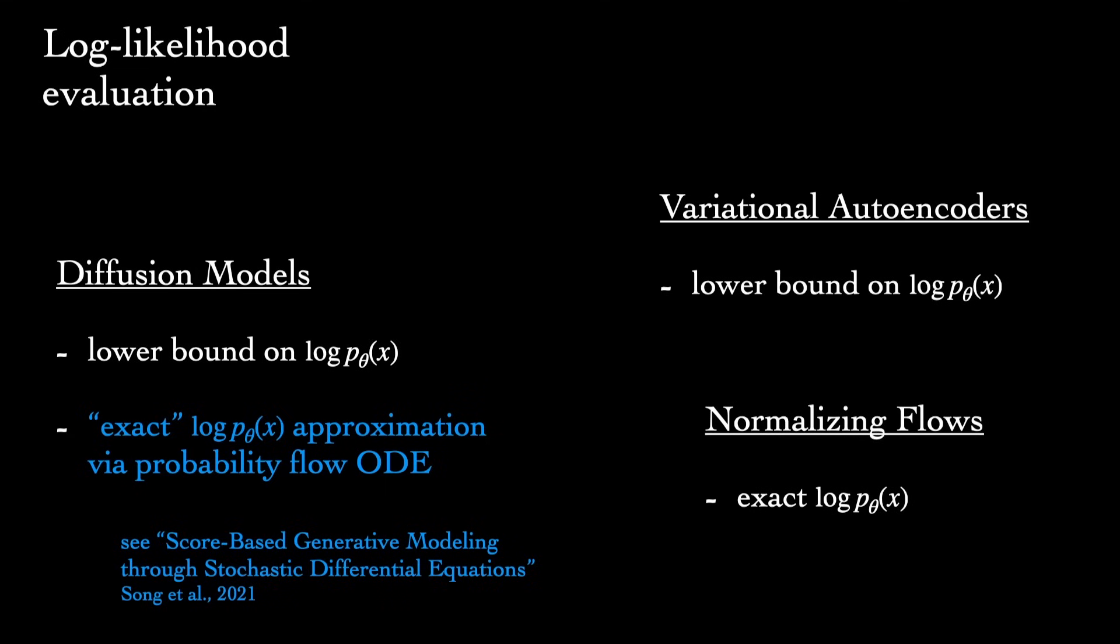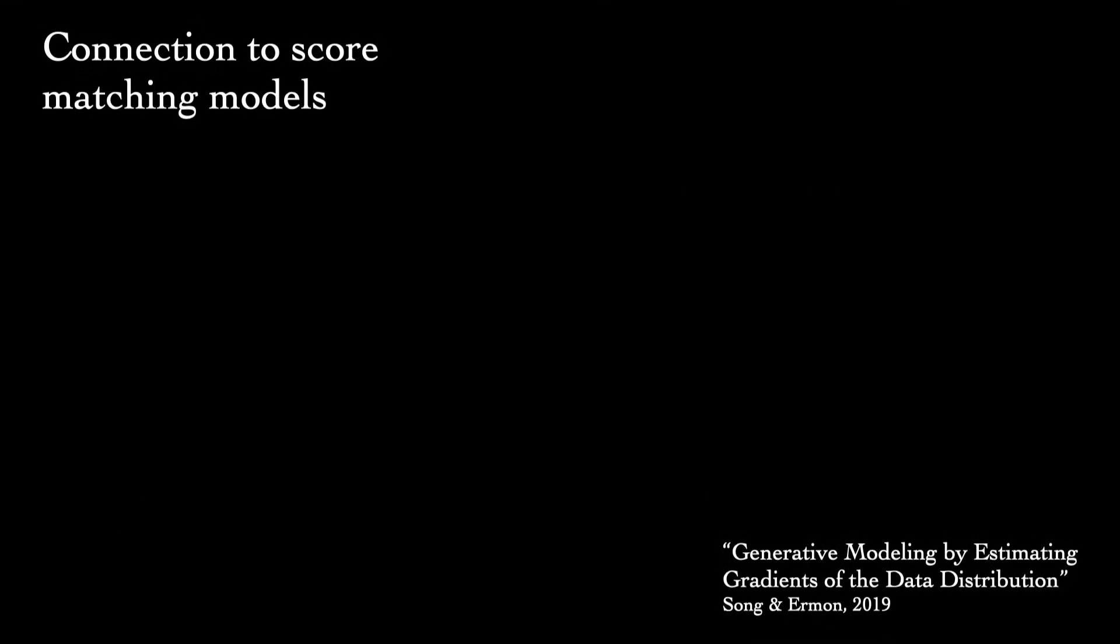There's a close connection between denoising diffusion models and what are called score-matching models, and often these are now grouped together into a single class of models. Score here refers to the gradient of the log of the target probability density with respect to the data. A score network is trained to estimate this value. Then a Markov chain is set up to actually produce samples from the learned distribution, guided by this gradient. Well, it turns out the score can actually be shown to be equivalent to the noise that's predicted in the denoising diffusion objective, up to a scaling factor. So we can think of undoing the noise in the diffusion model approximately as trying to follow the gradient of the data log density.